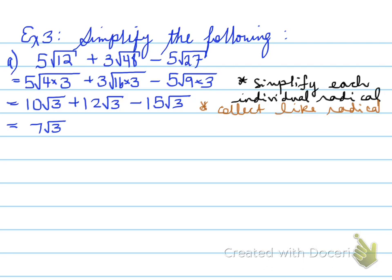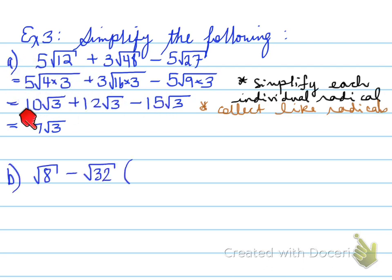So once again: first simplify each radical individually, then collect the like radicals to get the final answer.